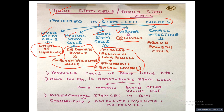Tissue stem cells produce cells of the same tissue type — meaning they are more differentiated. A liver stem cell gives rise to hepatocytes; a neural stem cell gives rise to neurons; a skin stem cell gives rise to skin cells; corneal stem cells give rise to eye cells; intestinal stem cells give rise to intestinal cells. In comparison to embryonic stem cells, which form many tissue types from a single stem cell.